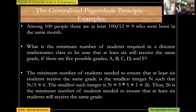By the generalized pigeonhole principle, with k=5 grades and a required minimum of 6 per grade, we compute 5×5 + 1 = 26. Hence 26 students are needed to ensure at least six students receive the same grade.